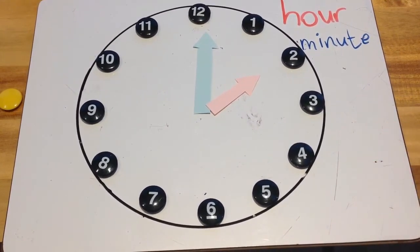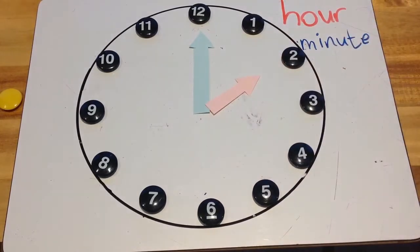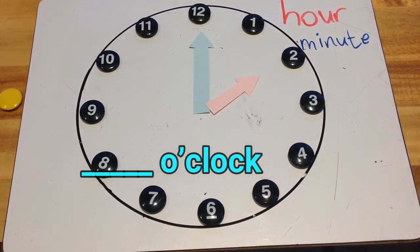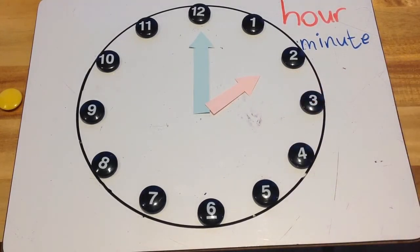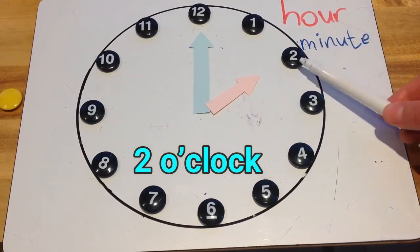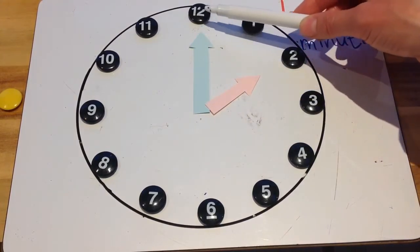Okay, so what we learned about before was that when the minute hand, the blue hand, is pointing to the 12, that means it's o'clock. It's something o'clock. Now the short hand is pointing to the 2, so that means it's 2 o'clock. 2 is the hour, and then the minutes are o'clock if it's pointing to the 12.